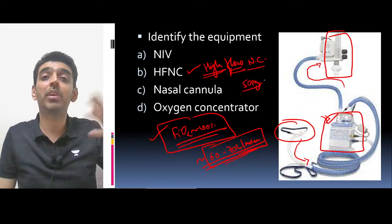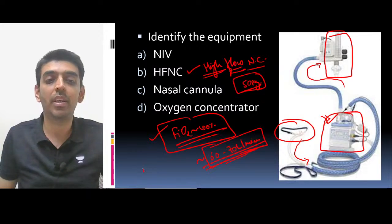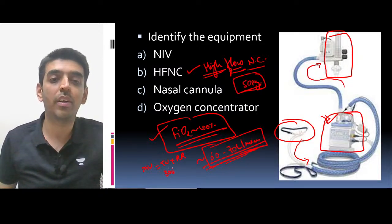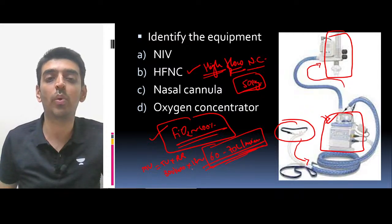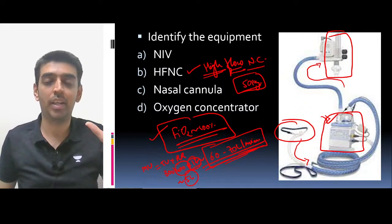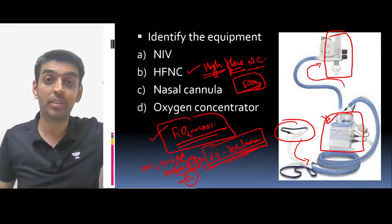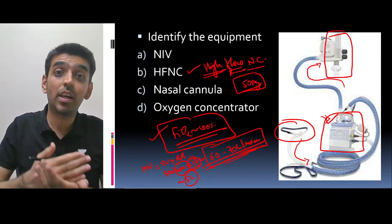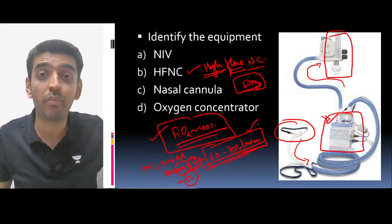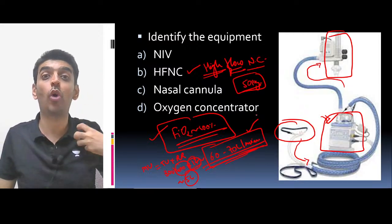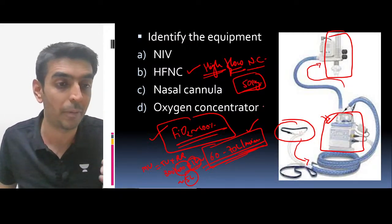To understand why such high flow is needed: suppose a 50 kg male — his minute ventilation is tidal volume multiplied by respiratory rate. Tidal volume is around 300 to 400 mL, into respiratory rate of 12, giving approximately 5 liters per minute of minute ventilation. With HFNC at 60 liters per minute, that is almost 12 to 13 times the normal minute ventilation — that is why it is called high flow nasal cannula.